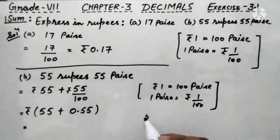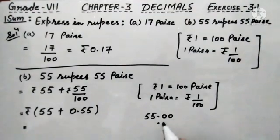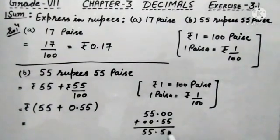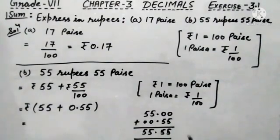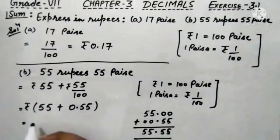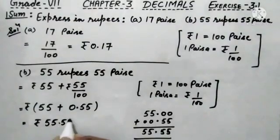Now we have to add two terms. This term has a decimal but 55 does not. So we write decimal after 55 and place two zeros — 55.00 — and add 0.55. Decimal ke niche decimal ajaega. 5, 5. And here we write 0, 0 and add them. After adding, the answer will be equals to 55.55 rupees. This is the required answer of the first sum B part.